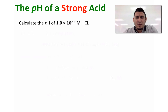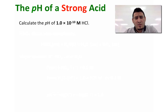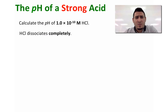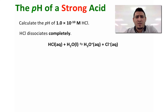Now let's consider how we calculate the pH of a strong acid at very low concentration, such as 1.0×10⁻¹⁰ molar. The acid here is hydrochloric acid — a strong acid, so it will completely dissociate in solution. The dissociation equilibrium is: HCl + H2O → H3O⁺ + Cl⁻.